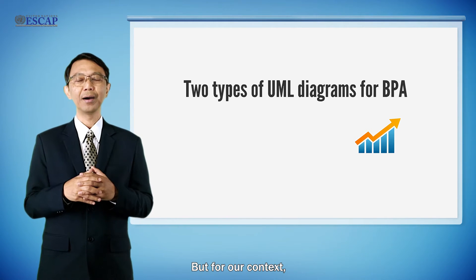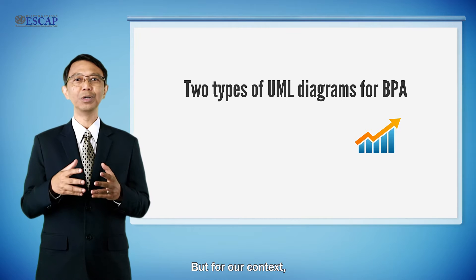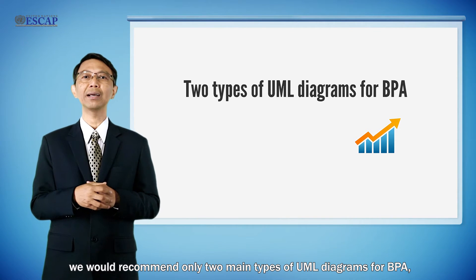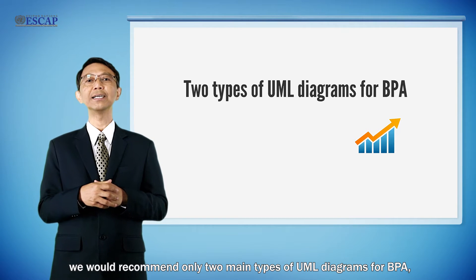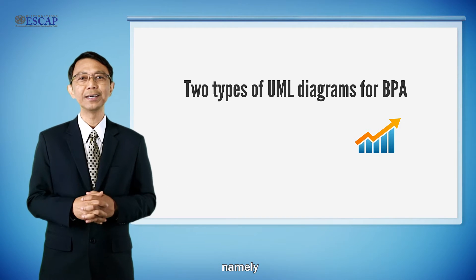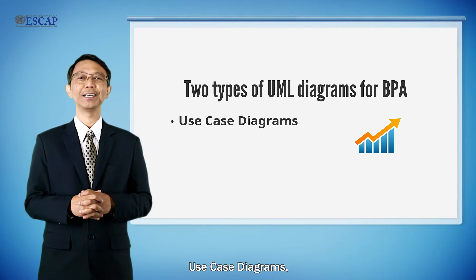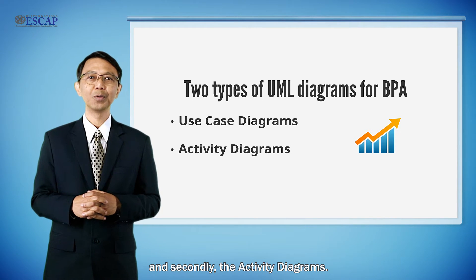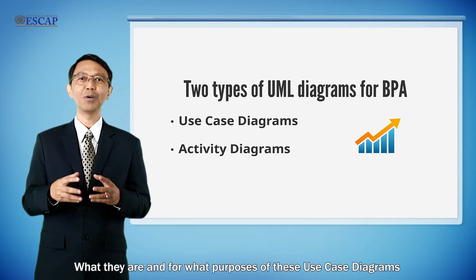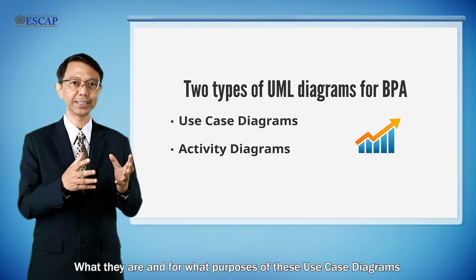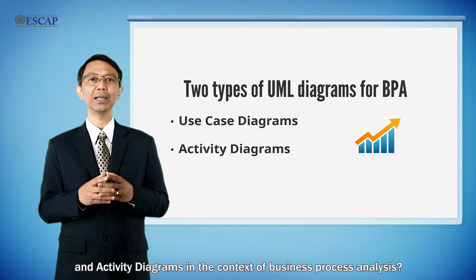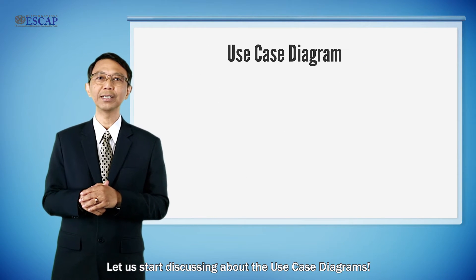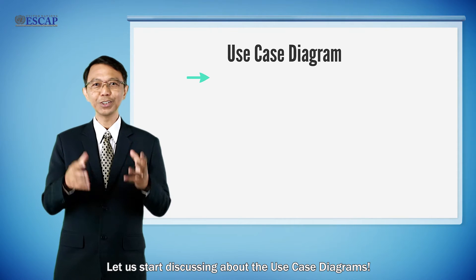There are several types of diagrams in Unified Modeling Language, but for our context we recommend only two main types for business process analysis: namely, use case diagrams and activity diagrams. Let us start discussing their purposes in the context of business process analysis.